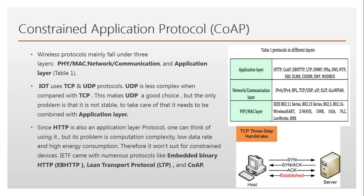When we discuss wireless protocols, they fall in three categories. The first is the physical or MAC layer, which includes protocols like IEEE 802.11 and IEEE 802.15.4 — which was initially used while referring to Zigbee, but now we use it for any low power wireless personal area network. In the network communication layer we have IPv6 and IPv4.